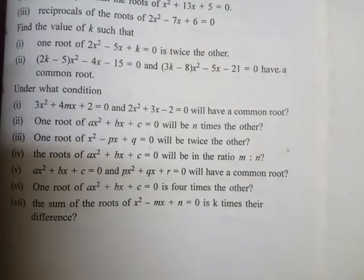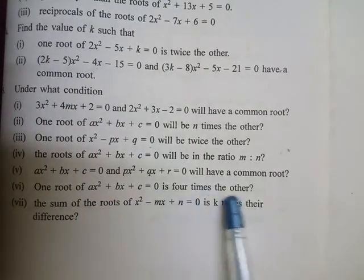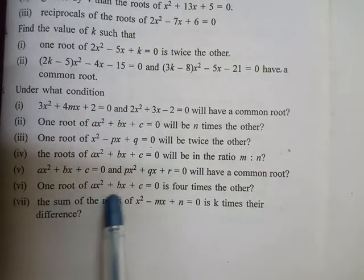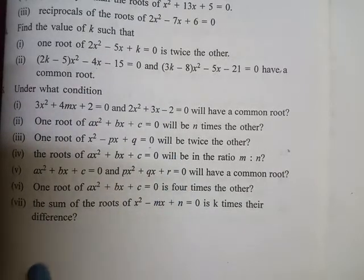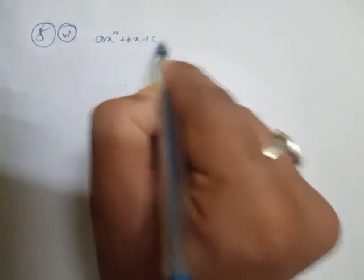We are going to solve Exercise 4.1, Class 10, Question Number 5 Roman 6. One root of ax² + bx + c = 0 is 4 times the other. We have to find out the condition. The given equation is ax² + bx + c = 0.